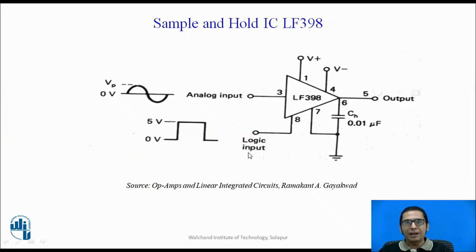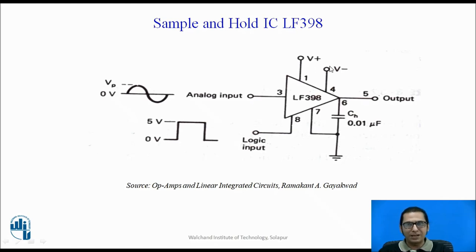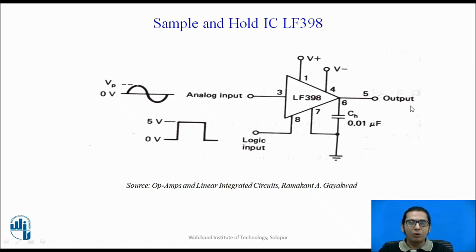Lastly, the sample and hold is available as an IC — part number LF398. While a sample and hold can be realized using an op-amp, transistor, capacitor, and resistors, LF398 provides this function directly in integrated circuit form. The external hold capacitor must be connected externally. It operates with dual power supply plus VCC and minus VEE. It has two inputs: the analog input to be sampled and a control input to set the sample and hold periods, with the sample and hold output available directly.